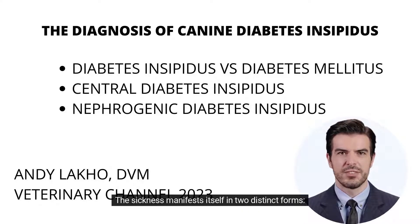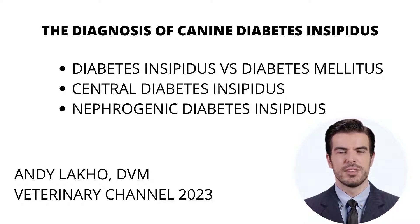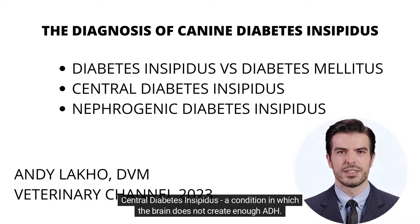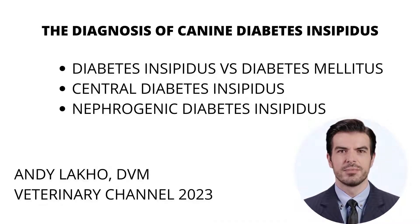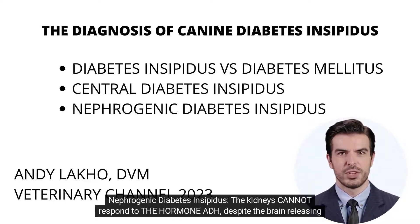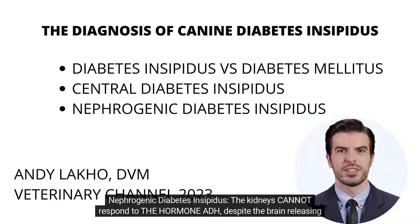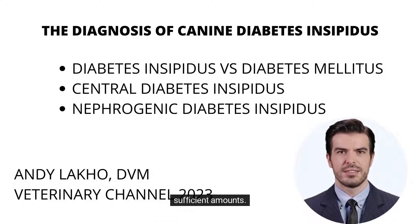The sickness manifests itself in two distinct forms. Central diabetes insipidus, a condition in which the brain does not create enough ADH. Nephrogenic diabetes insipidus, where the kidneys cannot respond to the hormone ADH, despite the brain releasing sufficient amounts.